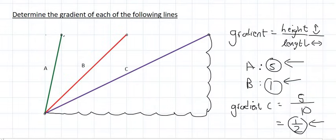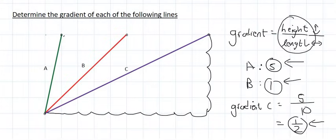So gradient is all about height divided by length. But as with what we saw with distance, there is a mathematical formula that will do all of this for us. And that is what we're going to look at next.